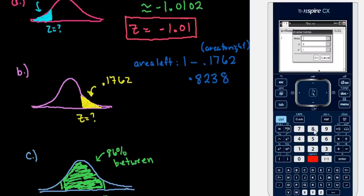We would type in the area to the left, you cannot put in the area to the right. If you put in the area to the right, it's going to give you a negative z-score. You could just change it to the opposite sign because we know it has to be positive since it's less than 50% to the right.